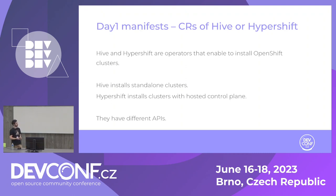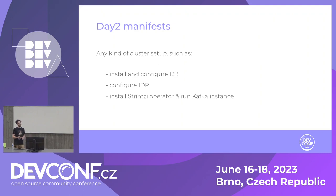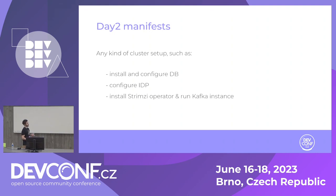Hypershift also installs OpenShift clusters, but you don't need those three machines to run the control planes — instead, all those services run as pods on the hub cluster. These projects have different APIs. Day two manifests can be anything you want to do after installation. When Hive or Hypershift install the cluster, it's empty — nothing is really going on. As day two, you'd install a database, configure IDP, install operators, run instances — making the cluster actually useful and ready for a developer.